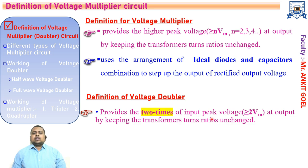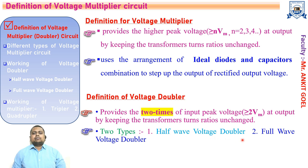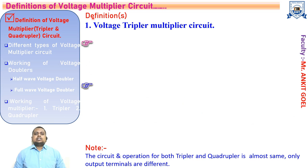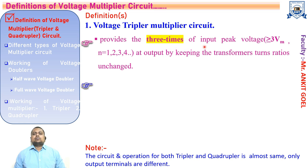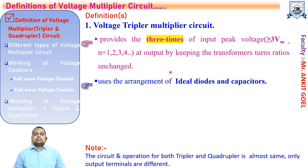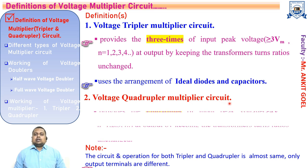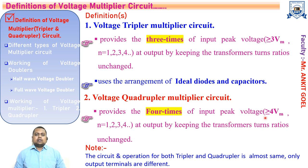A voltage doubler is a circuit which provides two times the input peak voltage at the output, keeping the transformer turns ratio unchanged. There are two types of voltage doubler: half wave voltage doubler and full wave voltage doubler. A voltage tripler multiplier circuit provides three times the input peak voltage at the output, keeping the transformer turns ratio unchanged, and is made up of diodes and capacitors. A voltage quadrupler multiplier circuit provides four times the input peak voltage at the output, keeping the transformer ratio unchanged. The circuit used for making the voltage tripler and voltage quadrupler is common — only the output terminal is changed.